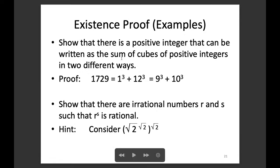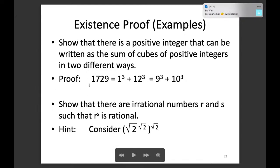The first example says: show that there is a positive integer that can be expressed as the sum of cubes of positive integers in two different ways. We want to find some integer equal to a³ + b³, and also equal to c³ + d³ for some integers a, b, c, d. One such example is 1729. This number can be expressed as 1³ + 12³, and also as 9³ + 10³.